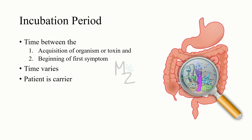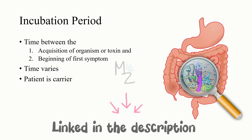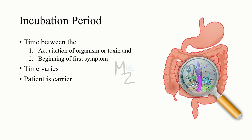The incubation period is the time between acquisition of the organism or toxin — the exotoxins or endotoxins — and the beginning of the very first symptom. It is a behind-the-scenes situation in which the pathogen is making its way into the body and the body's immune system is unaware of what's going on. This could be a few days or a week, depending on the type of pathogen — that's why the time varies.